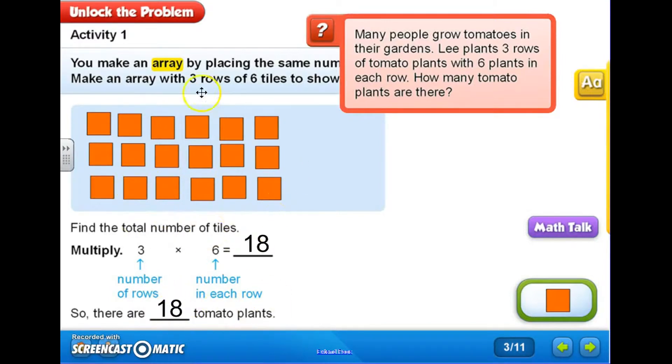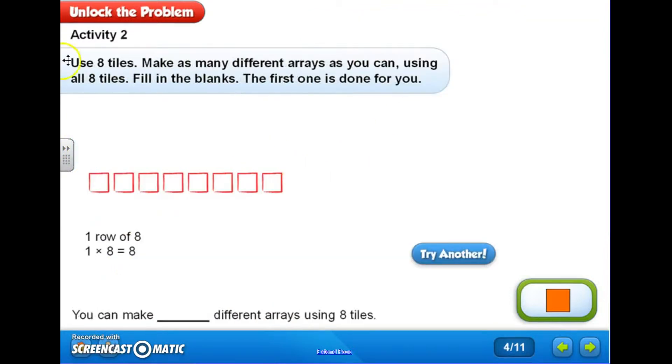So anyway I want to attack the array, it's easy to find the total once I made the array and I have a visual picture of what my number sentence actually looks like. Okay, let's try another one. Here I have eight tiles, and it says make as many different arrays as you can using all eight tiles. Fill in the blanks. The first one is done for you. So this array is a one by eight array. It has one row with eight in the row, which gives me a total of eight or a product of eight.